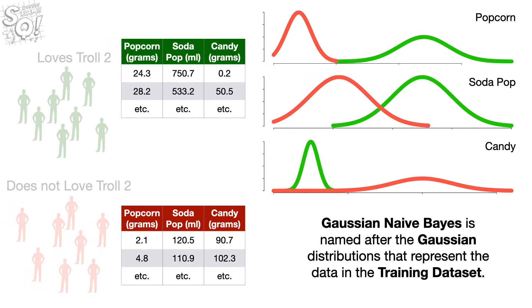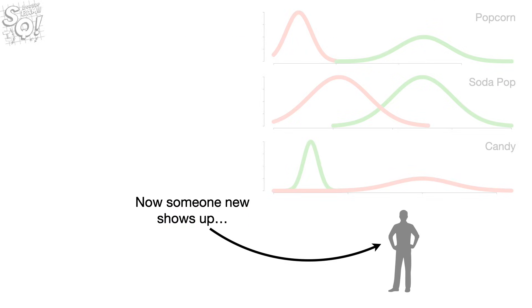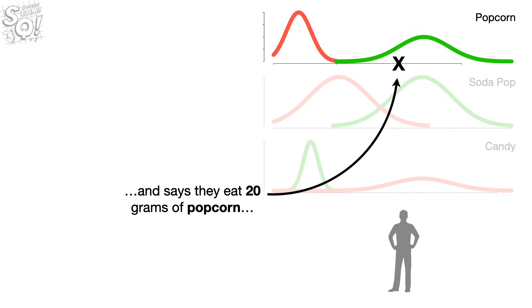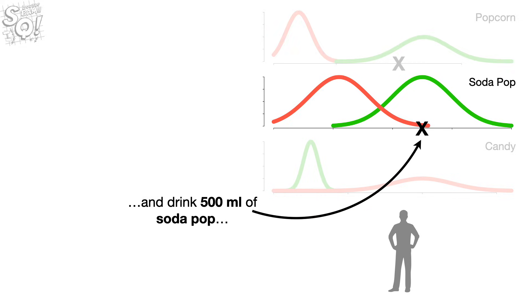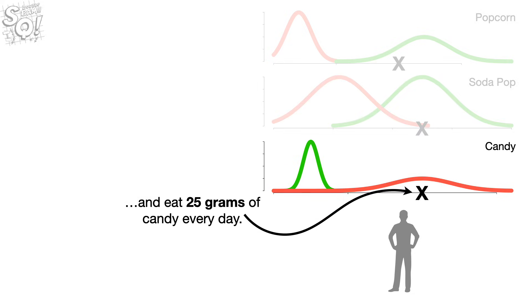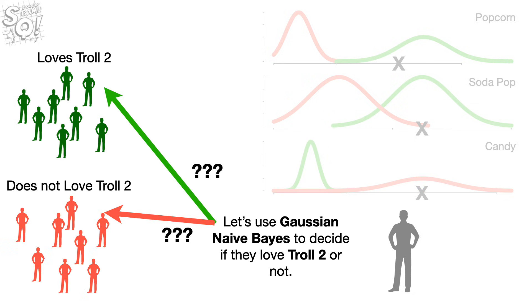Gaussian Naive Bayes is named after the Gaussian distributions that represent the data in the training data set. Now someone new shows up and says they eat 20 grams of popcorn and drink 500 milliliters of Soda Pop and eat 25 grams of candy every day. Let's use Gaussian Naive Bayes to decide if they love Troll 2 or not.